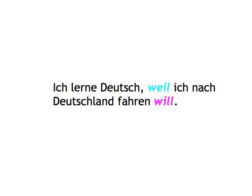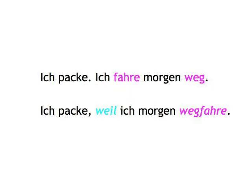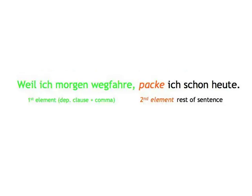That will also mean that a separable prefix verb finds itself suddenly joined together again. Ich packe. Ich fahre morgen weg. Ich packe, weil ich morgen wegfahre. Although the dependent clause usually follows the main clause, this order can be reversed. If that's the case, the whole dependent clause counts as the first element and is therefore followed by the finite verb of the main clause in the second position as per usual. Weil ich morgen wegfahre, packe ich schon heute.